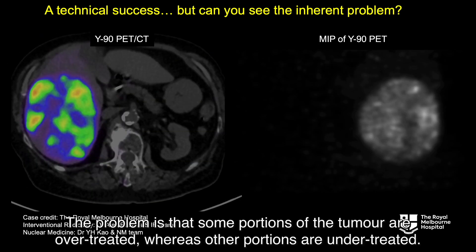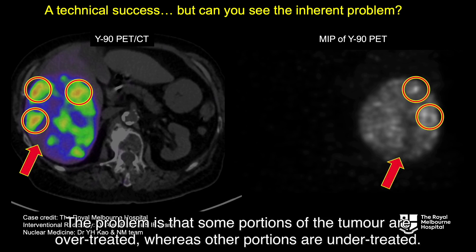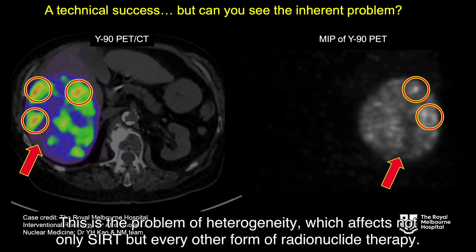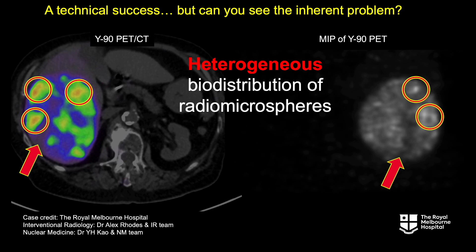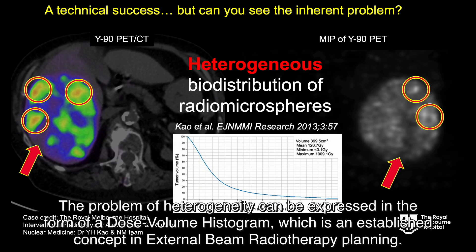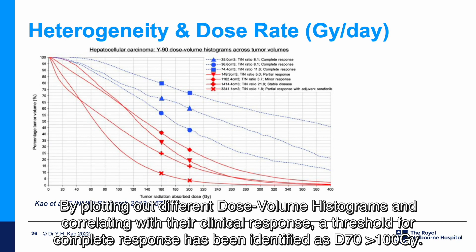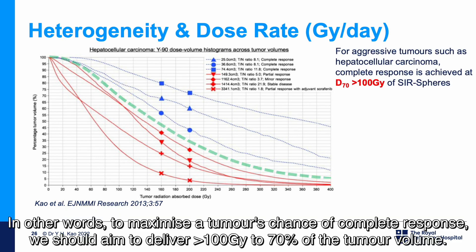The problem is that some portions of the tumour are over-treated, whereas other portions are under-treated. This is the problem of heterogeneity, which affects not only SIRT but every other form of radionuclide therapy. The problem of heterogeneity can be expressed in the form of a dose-volume histogram, which is an established concept in external beam radiotherapy planning. By correlating dose-volume histograms with clinical response, a threshold for complete response has been identified as D70 greater than 100 grey — meaning more than 100 grey should be delivered to 70% of the tumour volume.